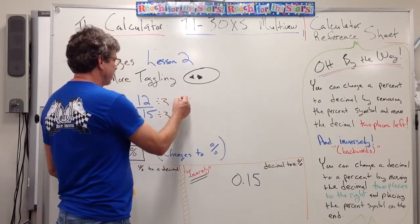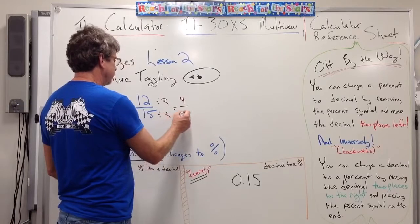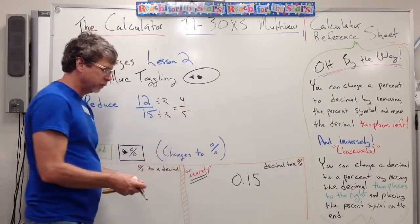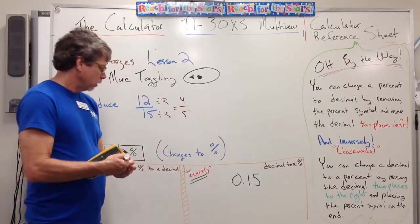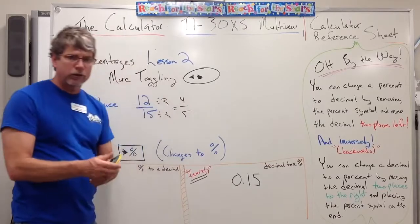3 goes into 12 four times, and 3 goes into 15 five times, and you can reduce it down to 4-5ths. You can also just let the calculator do the work as well.